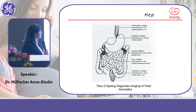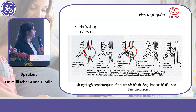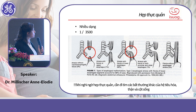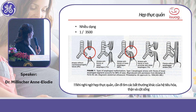Concerning esophageal atresia, the only type we are able to diagnose prenatally is the anomaly where the esophagus has no fistula — so there is liquid inside this segment of the esophagus and it forms a cul-de-sac, a pouch — an esophageal pouch, as you can see on these diagrams.